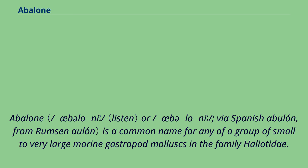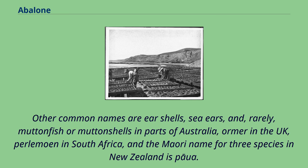Abalone, also spelled abelone, via Spanish abulón, is a common name for a group of small to very large marine gastropod mollusks in the family Haliotidae. Other common names are ear shells, sea ears, and rarely muttonfish or mutton shells in parts of Australia, ormer in the UK, perlimen in South Africa, and the Maori name for three species in New Zealand is Paua.